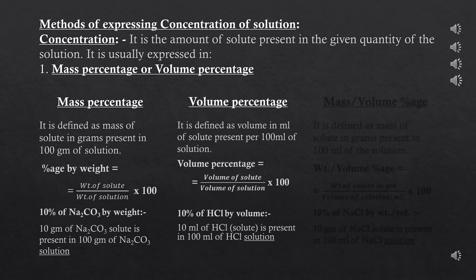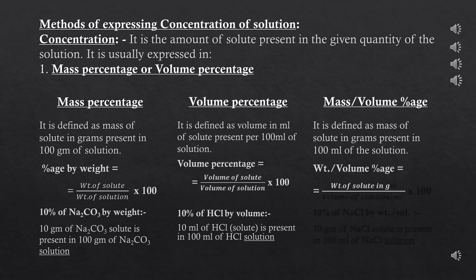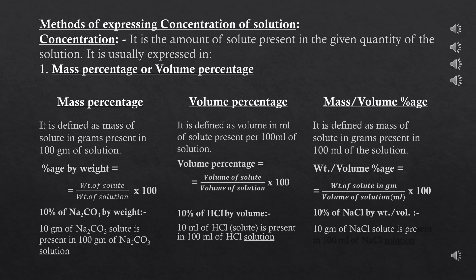There is another way to express concentration: mass by volume percentage. It is defined as the mass of solute in grams present in 100 ml of solution. Weight/volume percentage = (weight of solute in grams / volume of solution in ml) × 100. For example, a 10% solution of HCl by weight/volume means 10 grams of HCl is present in 100 ml of HCl solution.